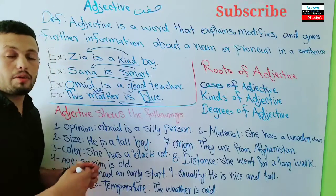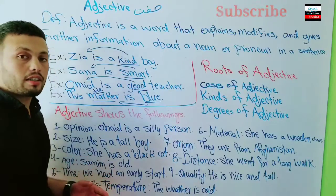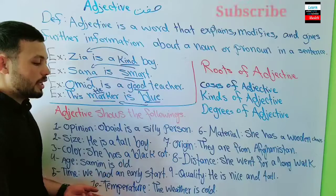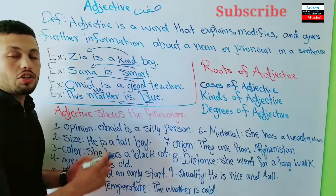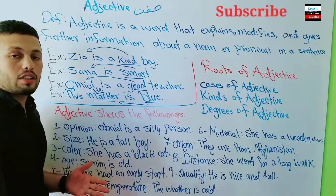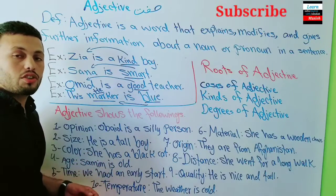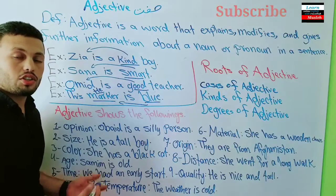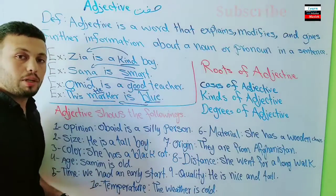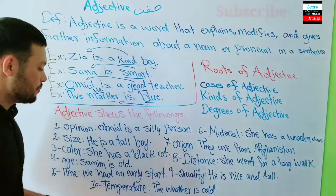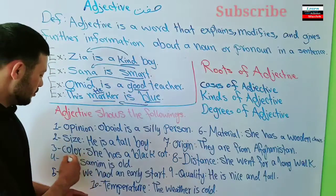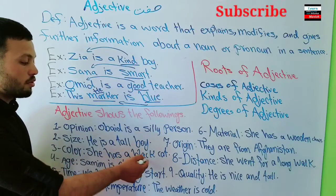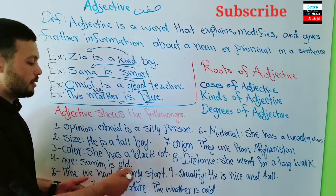Next, adjectives can show color — 'rang' in Dari. For example: 'She has a black hat.' Here 'black' is the adjective describing the color of the hat. So 'black' is a color adjective.